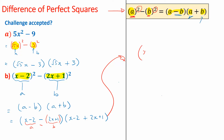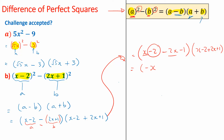So you've got (x minus 2 minus 2x minus 1), and you've got (x minus 2 plus 2x plus 1). Simplify it. This now gives me x minus 2x — what's x minus 2x? Negative x. Now I've got minus 2 minus 1.